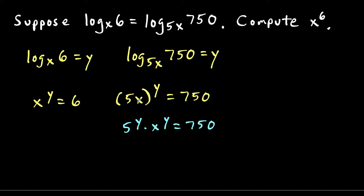So we're expanding this exponential expression, but now notice what we have. We have x to the y power, and x to the y power equals 6. So we could say 5 to the y power times 6 equals 750. Then we'll divide both sides by 6.